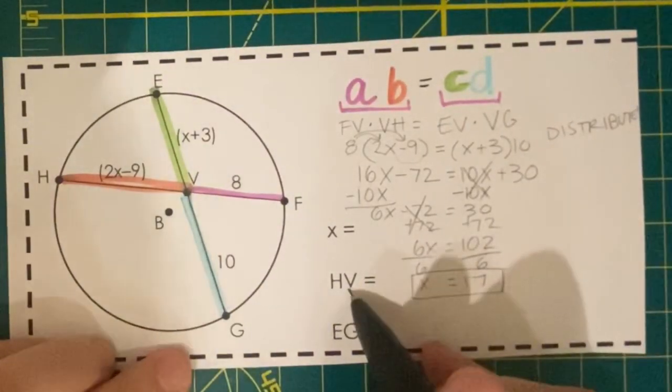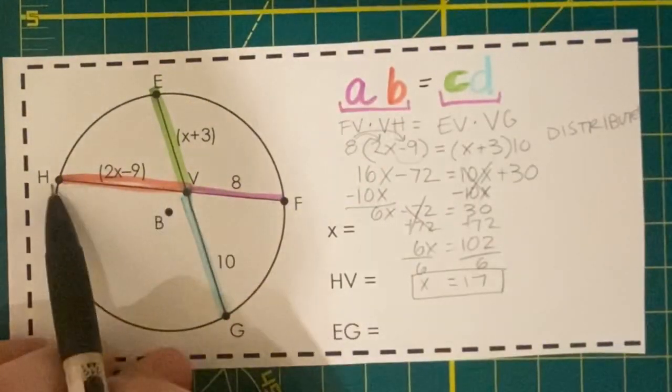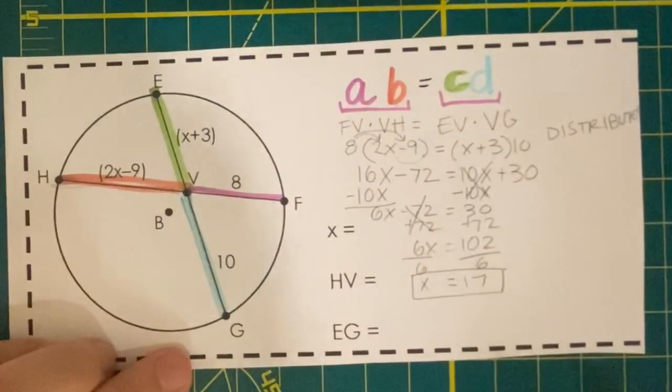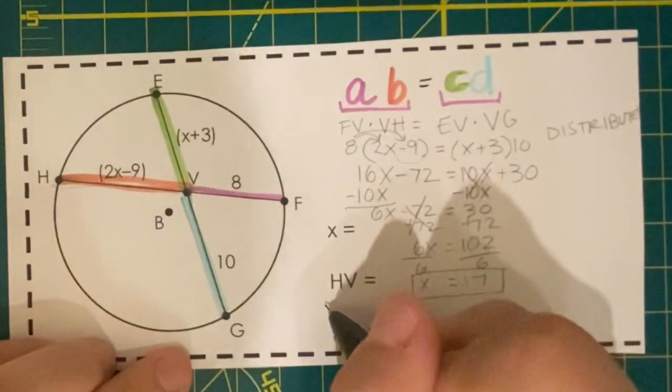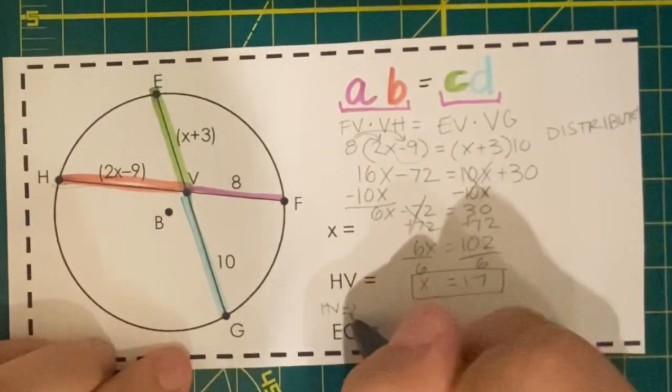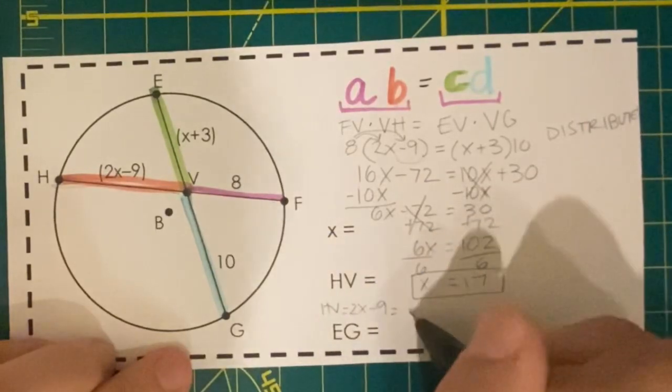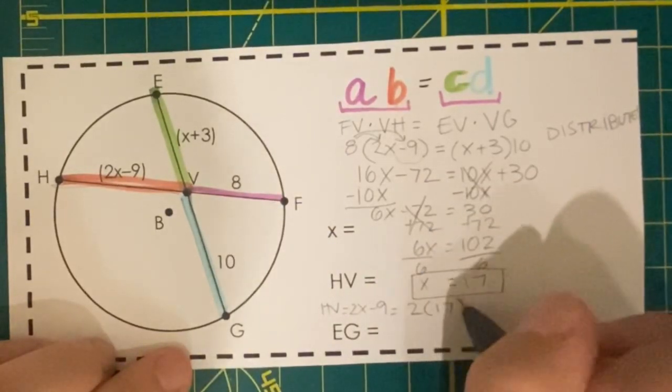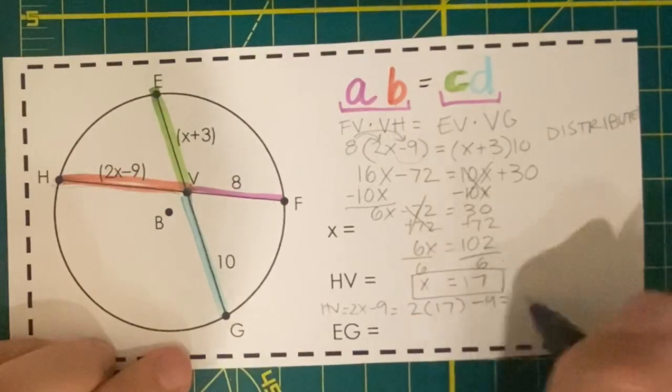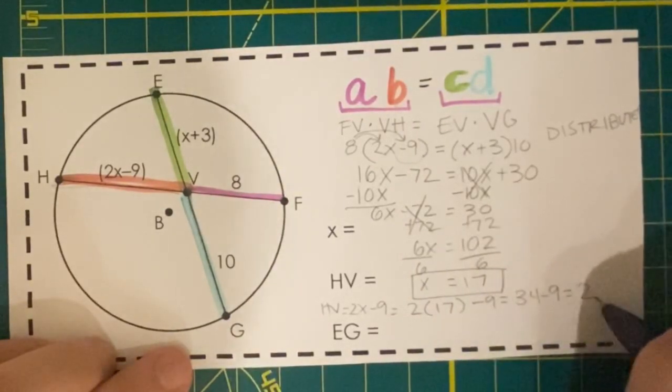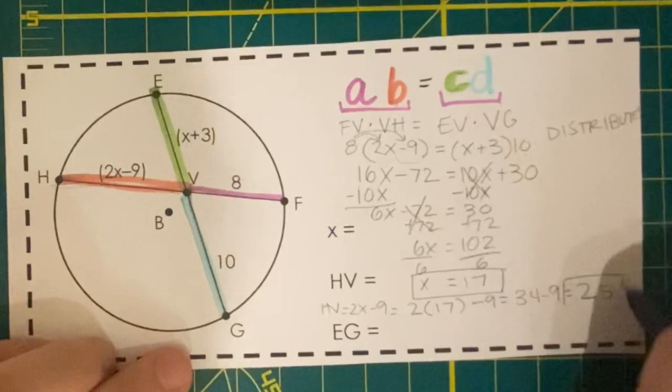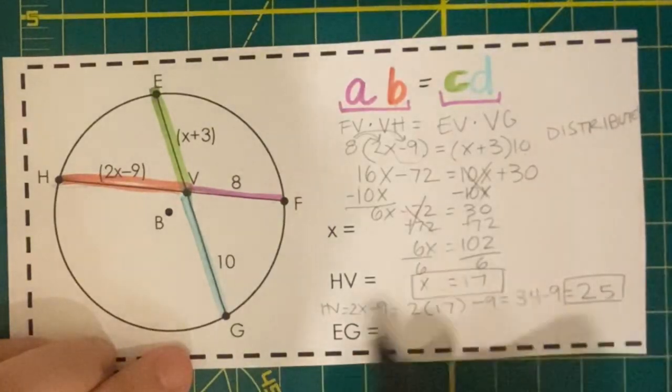Now we want to go and find HV. That's just the orange segment we identified as B. So HV equals 2x minus 9. Let's substitute in our 17. And 34 minus 9 is 25 units, so segment HV is 25 units long.